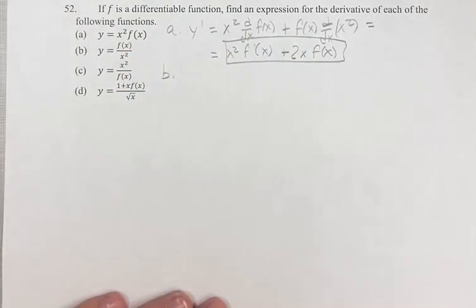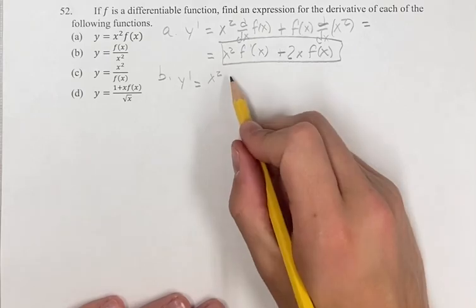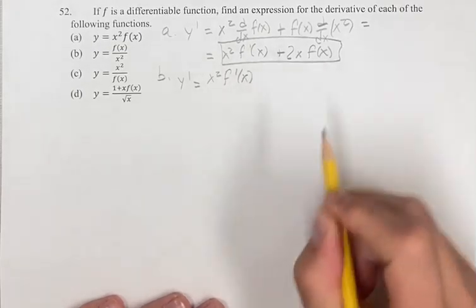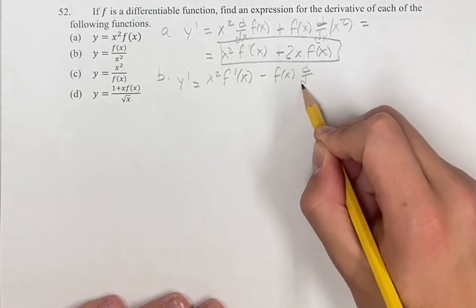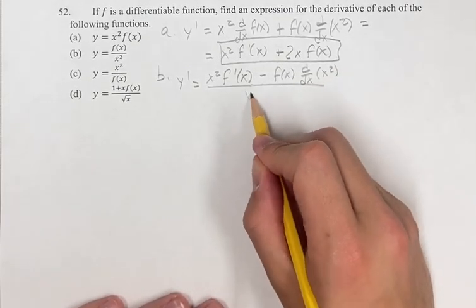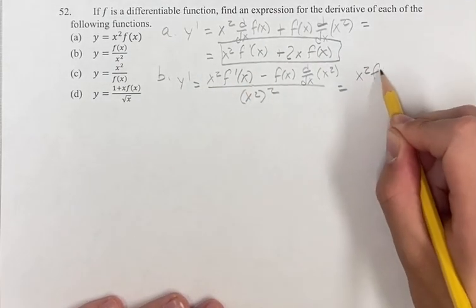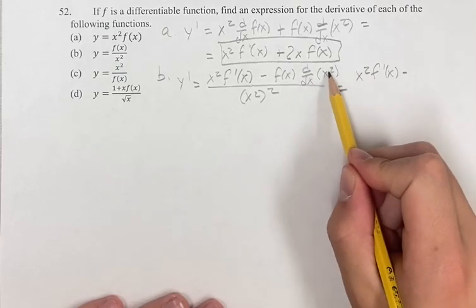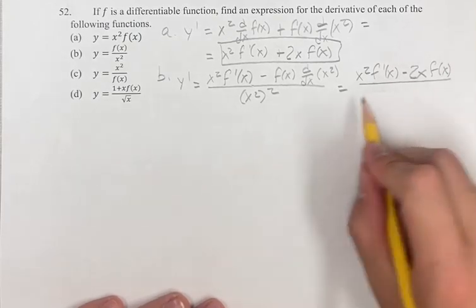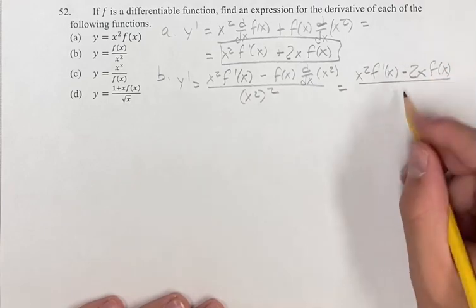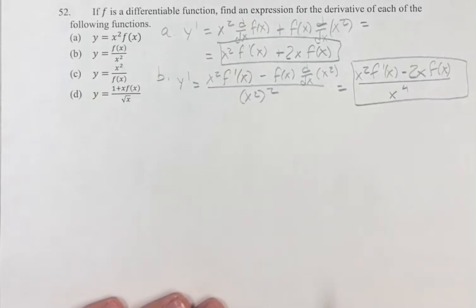For b, we have a fraction, so we can use the quotient rule. So we have the denominator times the derivative of the numerator, which we can write in that form straight off the bat, minus the numerator times the derivative of the denominator, over the denominator squared. This is equal to x squared times the derivative of f, minus — we just found the derivative of x squared is 2x — times f of x, over x squared squared. Doing it to the next power, you multiply the two exponents, so x to the 2 times 2, which is x to the 4. There's our answer for b.